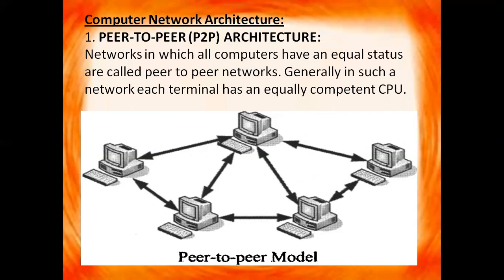Generally in such a network, each terminal has an equally competent CPU and they work as a terminal. They are basically used for transferring data from one computer to another. You can take the example of computers in your computer lab, where all the computers are connected to each other and you can transfer your file from one computer to another. In a peer-to-peer network, all computers are equal and all can transfer their resources from one to another.